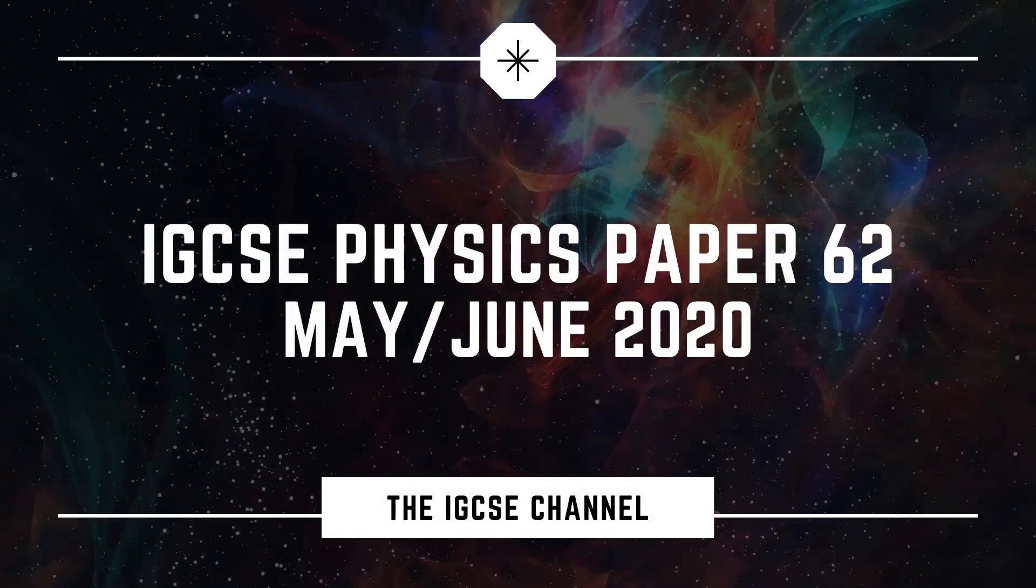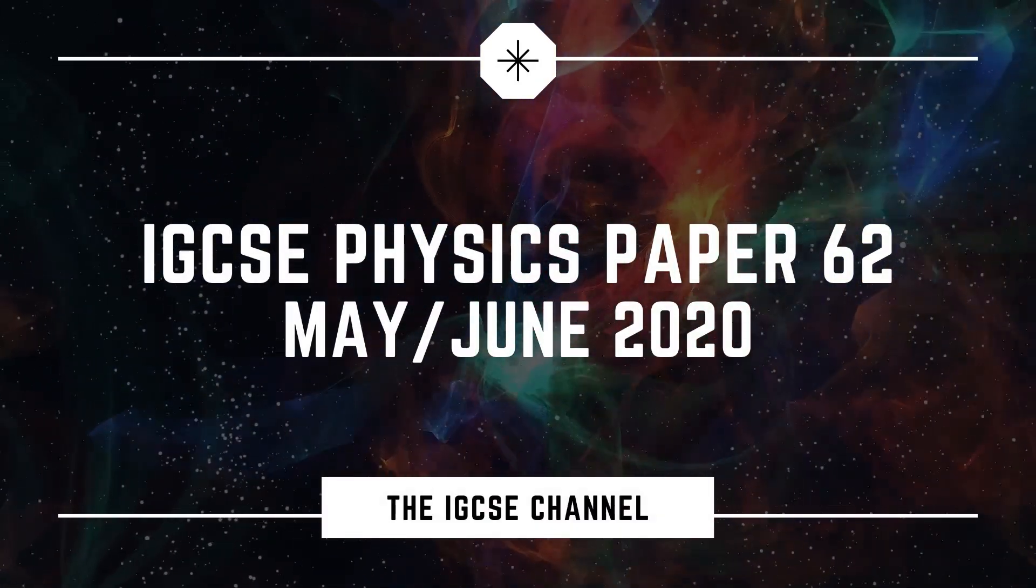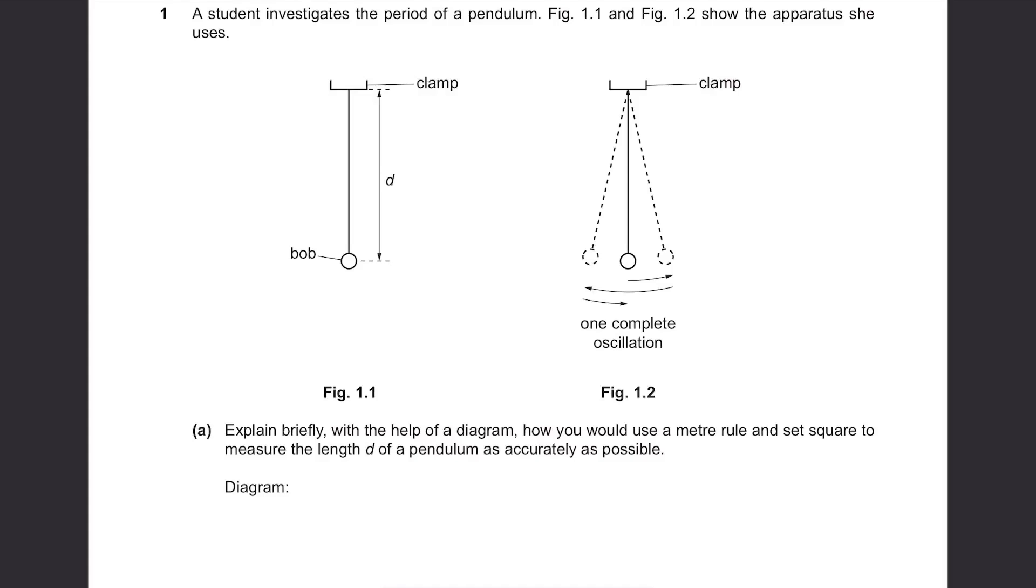Cambridge IGCSE Physics Major 2020 Paper 62. Question 1. A student investigates the period of a pendulum. Figure 1.1 and figure 1.2 show the apparatus she uses. We have a pendulum with a bob attached to the clamp. Part A.